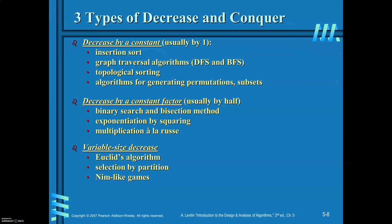Let me summarize what we have discussed. In decrease and conquer there are two stages: the first stage is to decrease the problem size, and then the conquer stage is to find the solution for the original problem. This problem reduction can be done in three ways. The first way is decrease by a constant; the second is decrease by a constant factor; and the third method is variable size decrease. Examples of decrease by a constant include insertion sort, graph traversal algorithms such as DFS and BFS, topological sorting, and algorithms for generating combinatorial objects like permutations and subsets. In this chapter, you are going to study insertion sort, graph traversal algorithms, topological sorting, and algorithms for generating combinatorial objects.